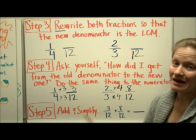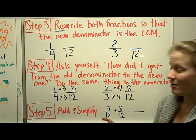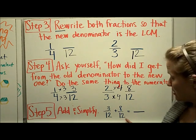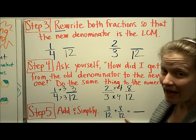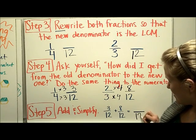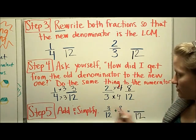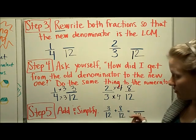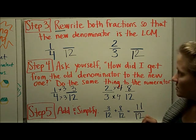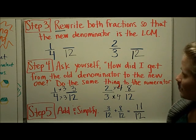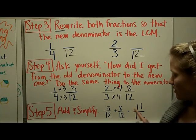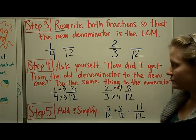The last step is to add and then simplify your fractions. Remember, when you add fractions, you don't add the denominators — you keep the denominator the same and just add your numerators. Eight plus three is eleven. So the answer to one-fourth plus two-thirds is eleven-twelfths.